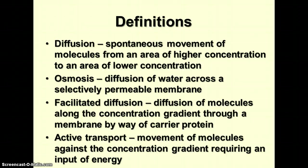Facilitated diffusion is the diffusion of molecules still moving from high concentration to lower concentration along the concentration gradient, but they have to move through the membrane by way of a carrier protein. The proteins make diffusion easier because the molecules are too large to pass through the membrane on their own — facilitated means made easier. Active transport is the movement of molecules against the concentration gradient, from low concentration to higher, requiring an input of energy — just as it takes energy to swim upstream or climb a hill.